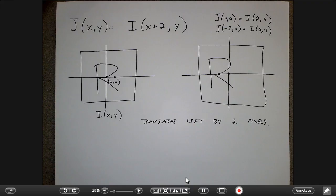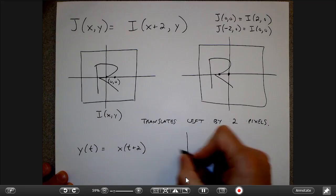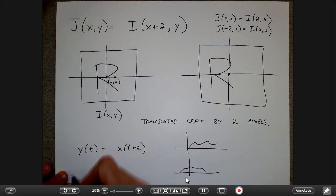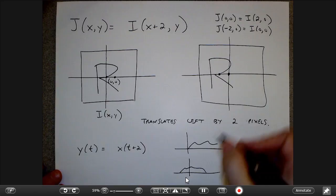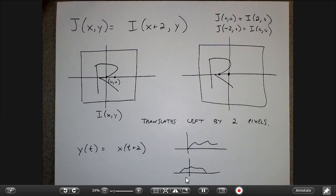This is similar to what we discuss with signals: if Y of T equals X of T+2, the new signal shifts left — a negative delay by two units. Which way am I shifting, left or right? If you're not sure, it's always easiest to just plug in some values of the new image and see where the pixels come from in the old image. That's the easiest way to tell whether you're doing the shifting right.